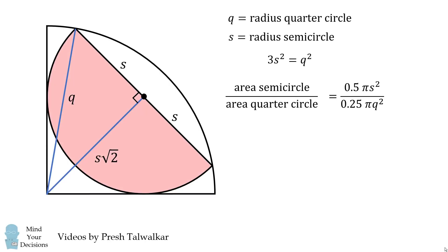So we go back to what we derived before, and now we substitute in that 3s² equals q². We simplify this fraction 2s²/3s², and we get the answer of 2/3. And that's the answer. Did you figure it out?